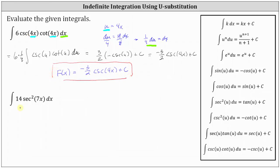Now for the second example, we have the indefinite integral of 14 times secant squared 7x dx. We do have a basic integration formula for the integral of secant squared x dx, which is equal to tangent x plus c. But because we have secant squared of 7x, we need to perform u substitution again.